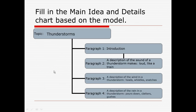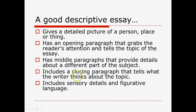Now we're going to take a look at the organization of a descriptive essay. As I said before, the organization is going to be a five-paragraph essay. We're going to compare this to the writing model — the topic of that model is thunderstorms. Paragraph one introduces the topic, and the last paragraph talks about the writer's feelings about the thunderstorm. The middle paragraphs provide detail about a different part of the subject.